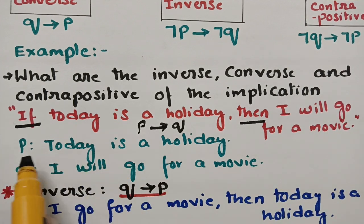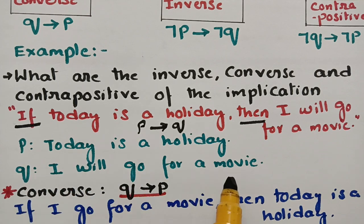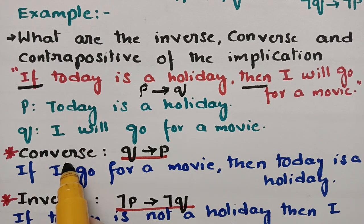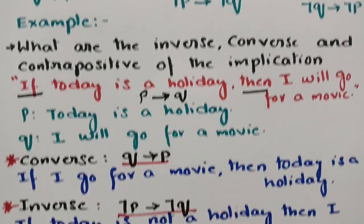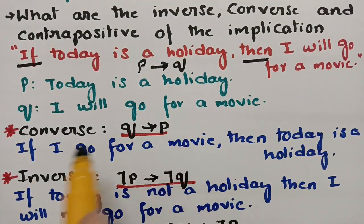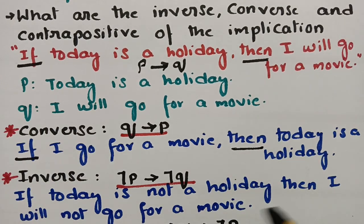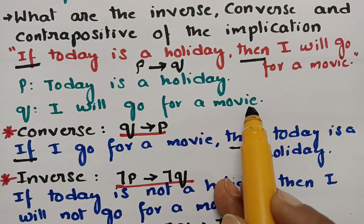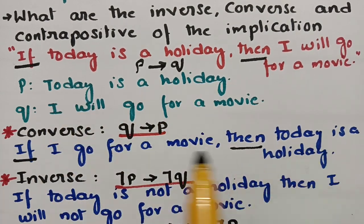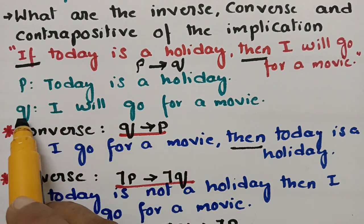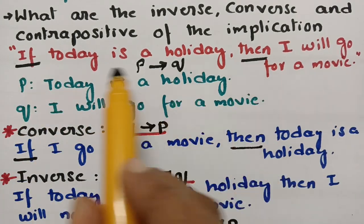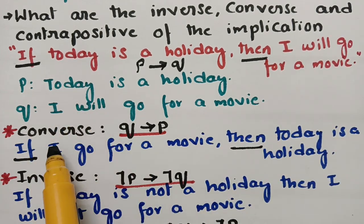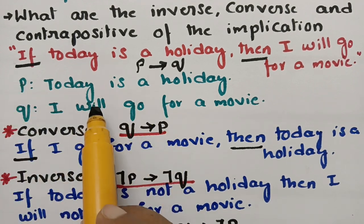These are the two statements: P is 'today is a holiday' and Q is 'I will go for a movie.' For the converse, the formula is Q implies P, so we start with if and end with then: 'If I will go for a movie, then today is a holiday.' It is very easy to attempt once P and Q are identified from the if-then statement — just write Q's sentence first and P's sentence second.